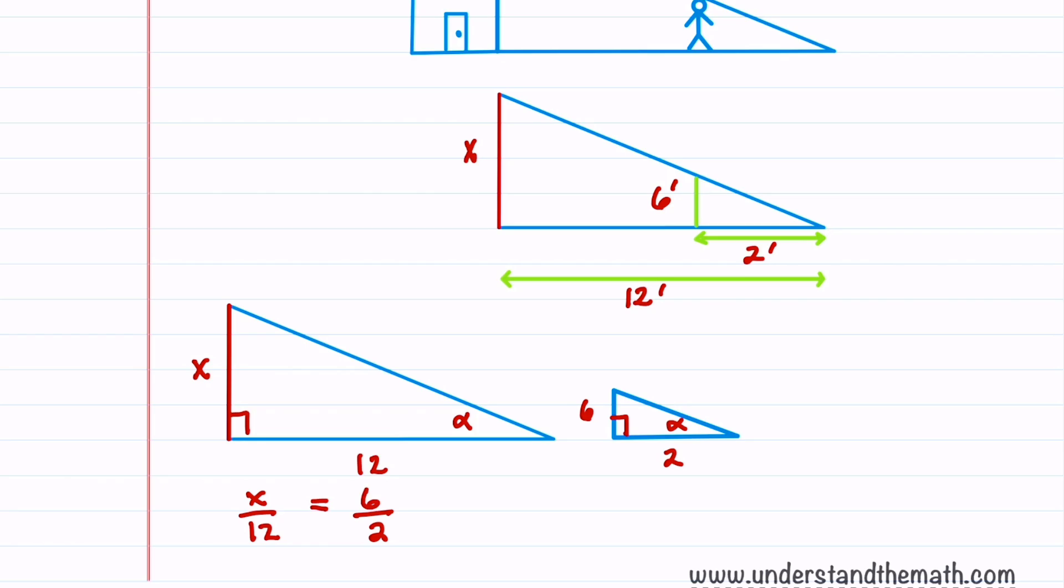We can then multiply both sides of the equation by 12, and we'll get x is equal to 3 times 12, which is 36. And let's include units on this. This is 36 feet. So by using similar triangles, we will be able to determine that the height of the building was 36 feet.